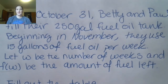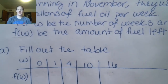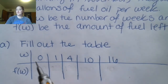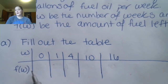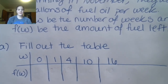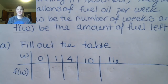The first part of this question is just to fill out this table. They've given some values for W, and you're going to fill out some values for F of W. Students are usually pretty confident about doing this, so I'd ask you to pause the video now and fill this out.